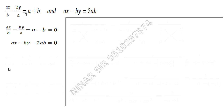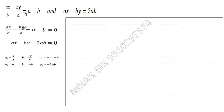Now let us get the values of a1, a2, b1, b2, c1, and c2. The coefficient of x is a1, so here a1 is a/b and a2 is a. The coefficient of y gives b1 as minus b/a and b2 as minus b. The constant terms give c1 as minus a minus b and c2 as minus 2ab.